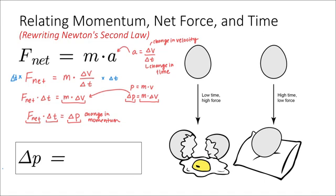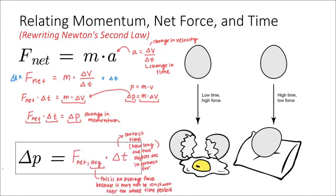I'll rewrite this equation below. So we can say that the delta p, in other words, the change in momentum of any object undergoing some external force—and in the case of an egg hitting the ground, the ground exerts an external force on that egg—is equal to the magnitude of that net force. And we're going to say it's the average.